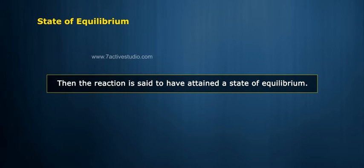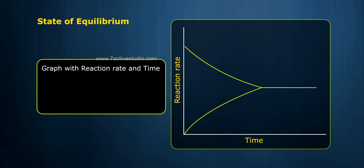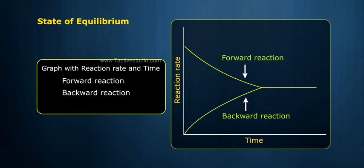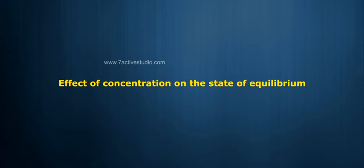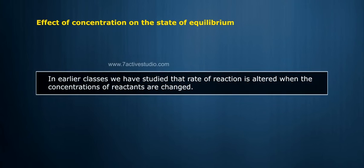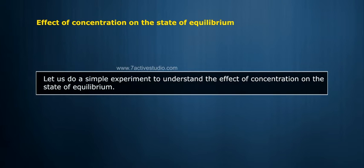Graph with reaction rate and time. In earlier classes, we have studied that rate of reaction is altered when the concentrations of reactants are changed. Let us do a simple experiment to understand the effect of concentration on the state of equilibrium.